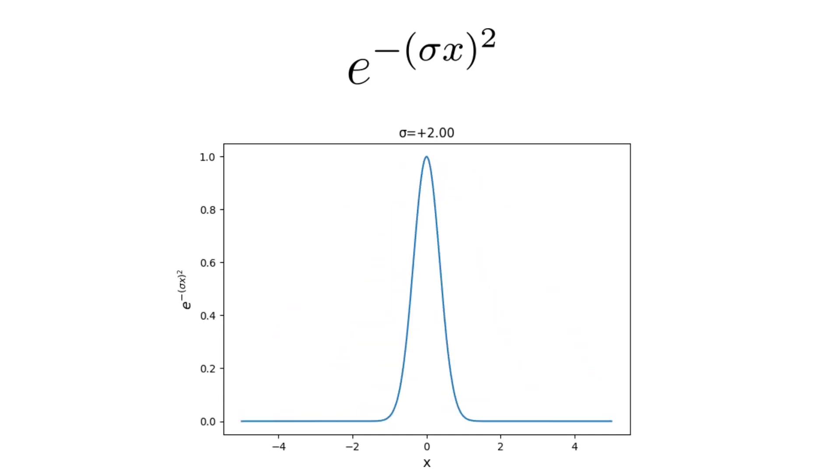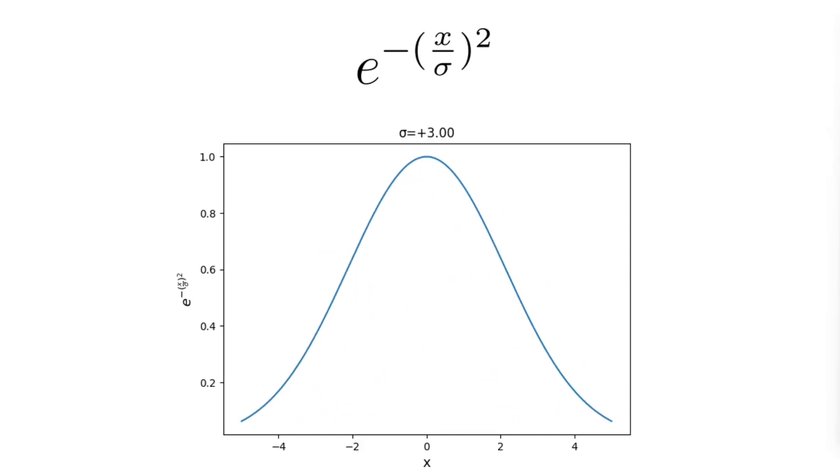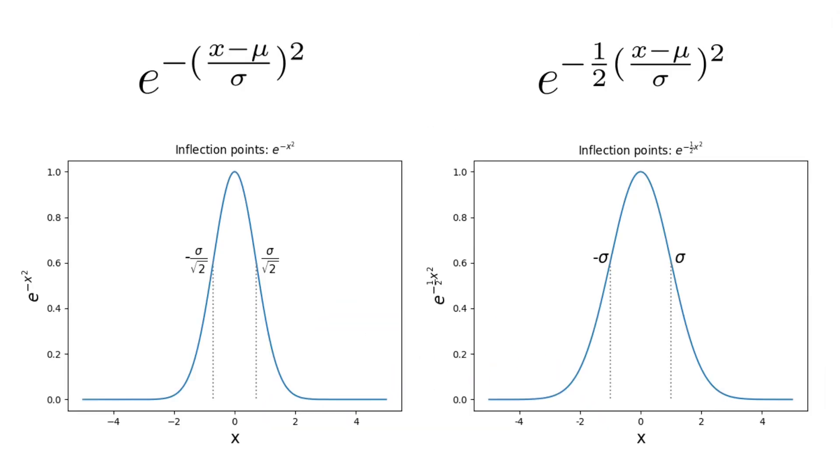However, if we model the function in this way, we can see that the spread of the bell is inversely proportional to the parameter sigma. So, instead we like it to be directly proportional and to attain that we divide the input x by sigma.